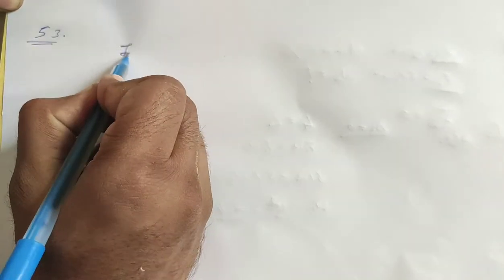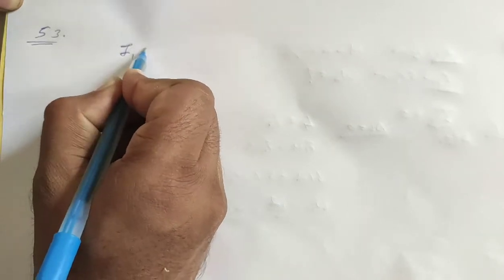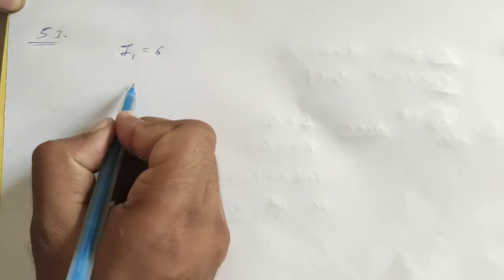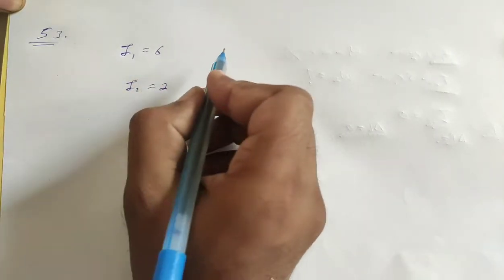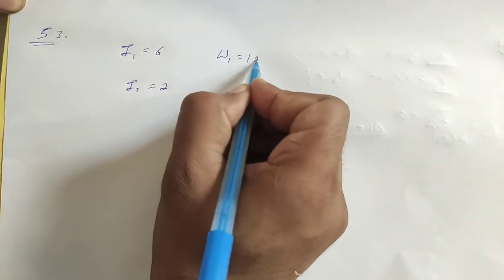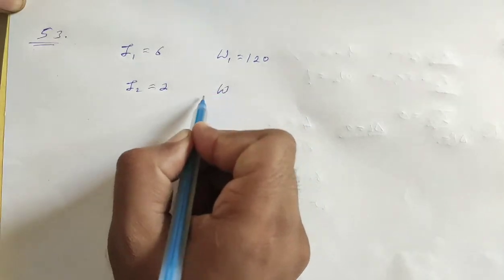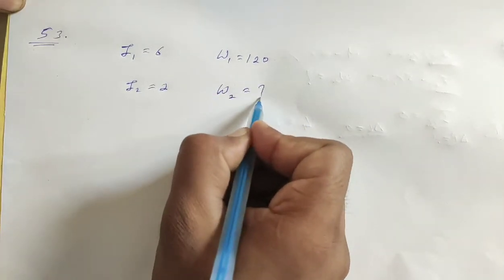Okay, moment of inertia decrease kar raha hai. First moment of inertia tha 6, second moment of inertia kitna hai? 2. Jab moment of inertia 6 tha, tab uski angular speed kitni thi? 120. Or jab moment of inertia 2 ho gaya, tab angular speed kitni hai?